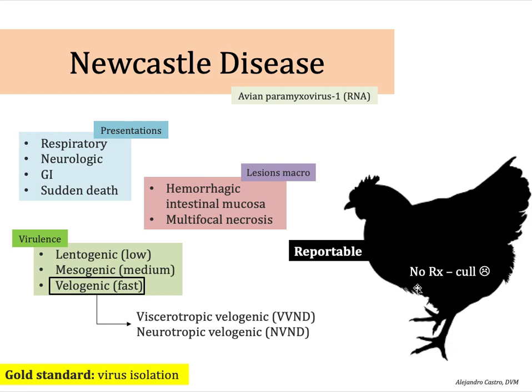Unfortunately, there is no treatment, so what is recommended is culling of the animals. There are some macroscopic lesions that some consider pathognomonic — those are hemorrhagic intestinal mucosa and multifocal necrosis — and these are usually seen in the most severe cases.